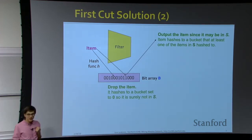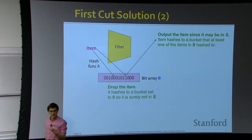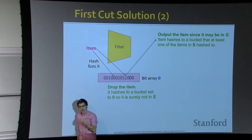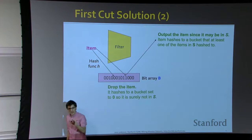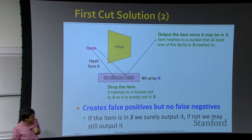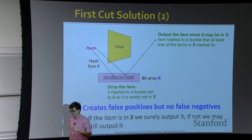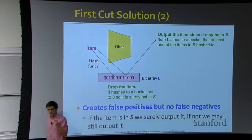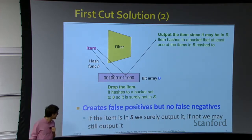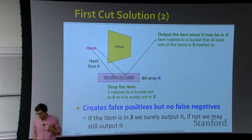The key observation: if a stream element lands on a bit set to zero, I know for sure it is not in S — I can throw it away. But if it lands on a one, I actually don't know — it could be from S, or it could have just hashed to the same bucket as something from S. This means we get false positives but no false negatives: everything that should go through will go through, but some extras will too.